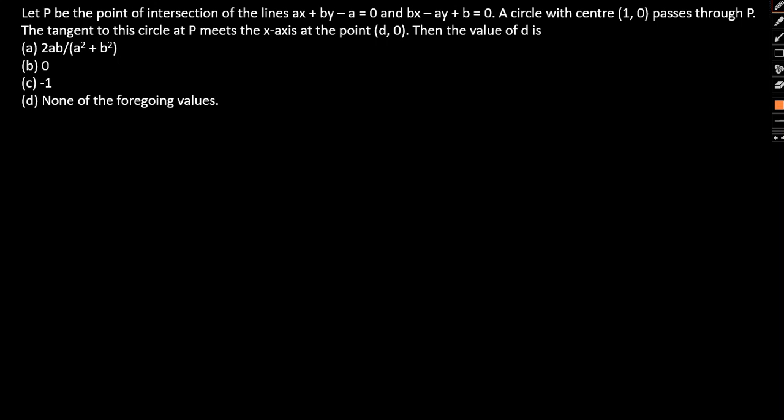Let's take the two equations: AX plus BY minus A equal to 0, let this be equation 1, and BX minus AY plus B equal to 0, let this be equation 2. Now let's do one thing - equation 1 into A plus equation 2 into B.